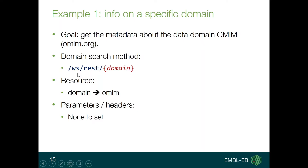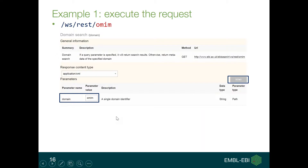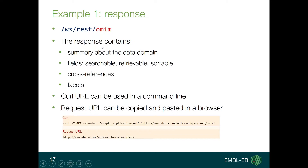You select the domain search method at /ws/rest/domain with domain set to OMIM. For this example, there are no other parameters to set. This is what the interface will look like — OMIM is the domain to set, and if you press Send you will see the result.